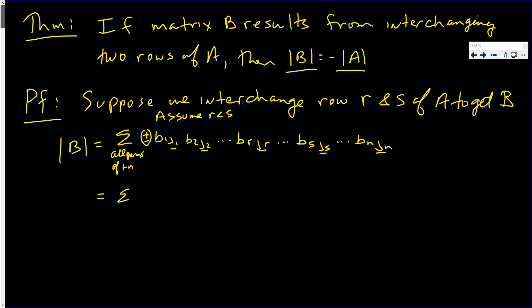Now for the most part the BIJIs are just AIJIs — the first entry is just A1J1, A2J2, and so on. But the entry at row R changes: it becomes ASJS, and likewise the entry at row S changes to ARJR, because in matrix B rows R and S have been swapped.